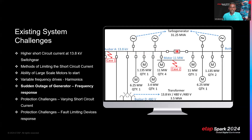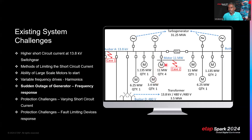A fault current limiting device such as an IS-limiter can be used to stay within 40 or 50 kA switchgear ratings. Another challenge is motor starting: large motors draw six to seven times rated current during starting, causing voltage dips on the 13.8 kV bus that impact other running motors. Additionally, variable frequency drives inject harmonics that may resonate with 13.8 kV cable capacitance, requiring detailed harmonic studies.